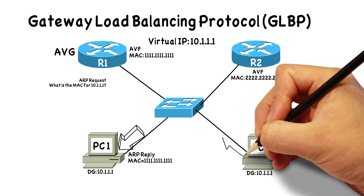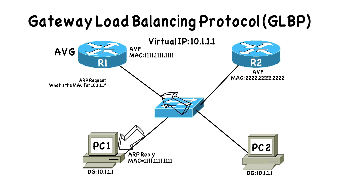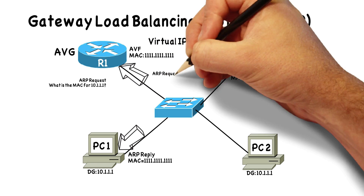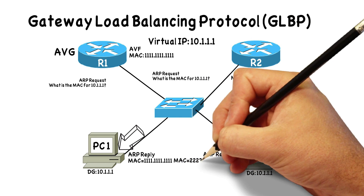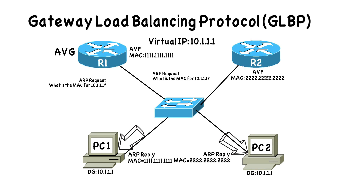PC1 now has a MAC address corresponding to its default gateway's IP address and can send traffic off of its local subnet. Now PC2 also needs to get off the subnet. PC2 is configured with a default gateway of 10.1.1.1, just like PC1. It also sends an ARP request, handled by router R1 acting as the Active Virtual Gateway — asking the same question. But this time, the AVG responds saying the MAC address for 10.1.1.1 is an all-twos MAC address — a different answer than it gave PC1. That virtual MAC address belongs to a different AVF: R2, which discovered that virtual MAC address from the AVG via hello messages.